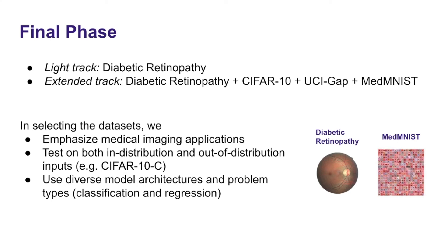The final phase has two different tracks: a light track, which only uses the diabetic retinopathy data set and is intended to make it easy to participate in the competition, as well as an extended track which additionally includes CIFAR-10, UCI-GAP, and the medical MNIST data sets. In selecting these data sets, we wanted to emphasize medical imaging applications with important real-world relevance, and we considered in-distribution and out-of-distribution inputs, as well as a diverse set of model architectures and problem types including regression and classification.